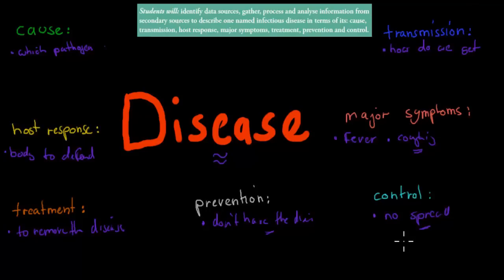So these are the words you need to know because the dot point itself says students will identify data, gather sources, and analyze information on secondary sources to describe one named infectious disease in terms of its cause, transmission, host response, major symptoms, treatment, prevention, and control. So all of the words are covered here. We're going to cover one example, but you might cover a different example. Which one you choose doesn't matter, but you have to answer all these different points for whichever one you chose.